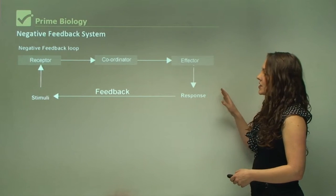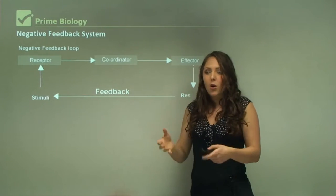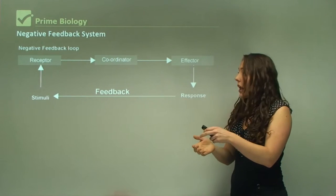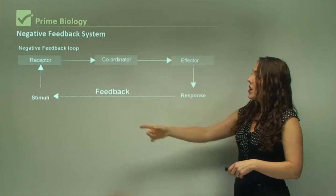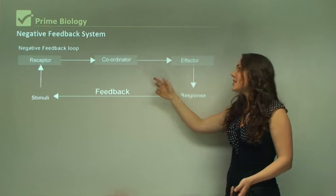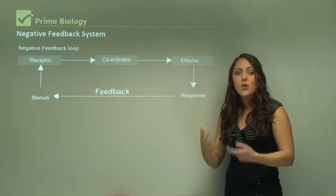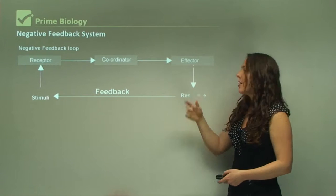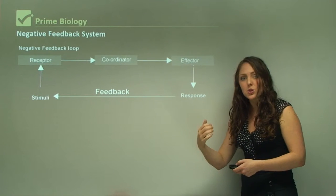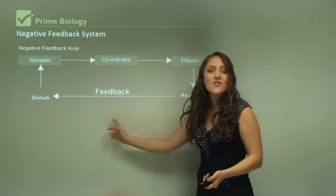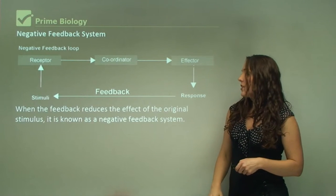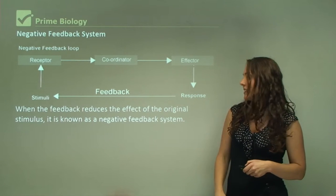In a feedback mechanism, the response alters the stimulus. For example, if you place your hand on an extremely hot pot, receptors in your skin detect the temperature change. The signal goes to the coordinator — the brain — which sends a message via the nervous system to an effector. The nerves make your muscles contract to pull your hand away from the hot pot. This feedback mechanism continues until a stable state is reached.